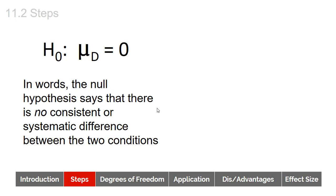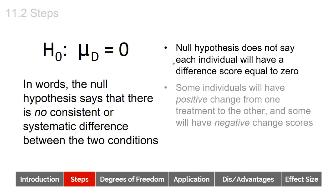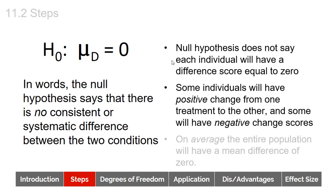Let's look at what the null hypothesis looks like. We have the null hypothesis symbol with mu-d — the differences between the means in the population — and we say that equals zero. In other words, there's no consistent or systematic difference between the two conditions. The null hypothesis doesn't say every individual will have a difference score of zero; some individuals will have a positive change and some a negative change, but on average the entire population will have a mean difference of zero — nothing systematic is happening.